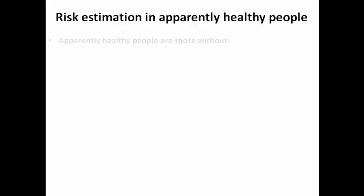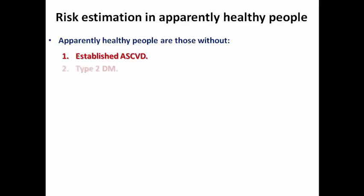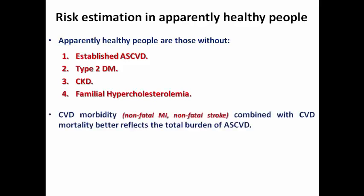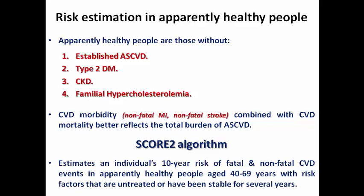What do we mean by 'apparently healthy'? We mean those without established cardiovascular disease, without diabetes, without CKD, and without familial hypercholesterolemia. In this guideline, cardiovascular morbidity — which includes non-fatal events like non-fatal MI and non-fatal stroke — is combined with cardiovascular mortality, to more accurately reflect the total burden of atherosclerotic cardiovascular disease. That is why the SCORE2 algorithm estimates the individual's 10-year risk of fatal and non-fatal cardiovascular events in apparently healthy people aged 40 to 69 years, with risk factors either untreated or stabilized for several years.